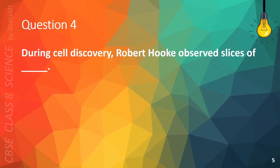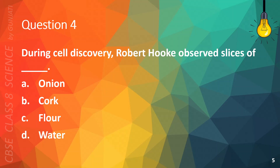Question 4. During cell discovery, Robert Hooke observed slices of blank. A. Onion. B. Cork. C. Flour. Or D. Water. The correct answer is B. Cork.